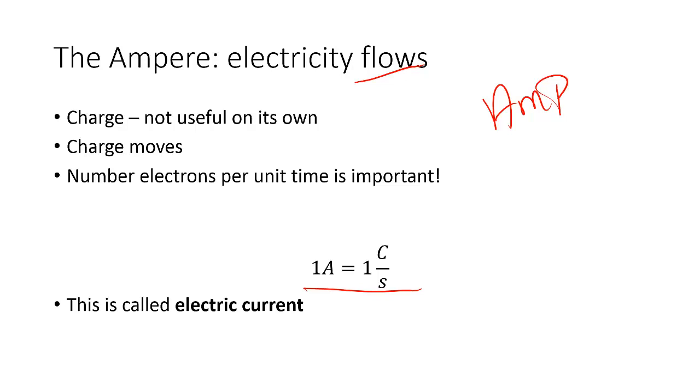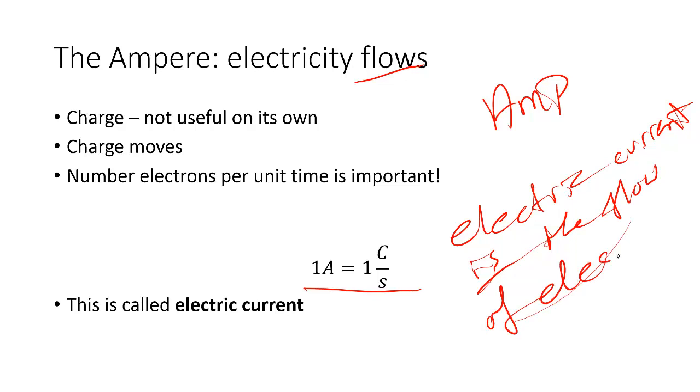So this is the ampere, and it's defined as one coulomb per one second. And this is known as electric current. So you're going to see this a lot. An electric current is the flow of electrons.